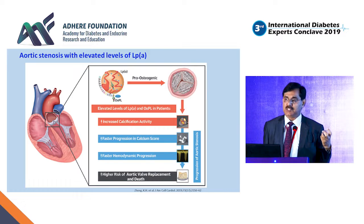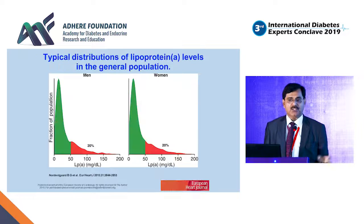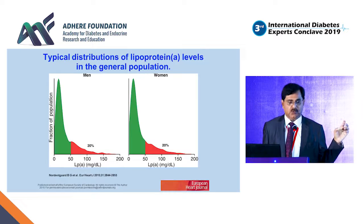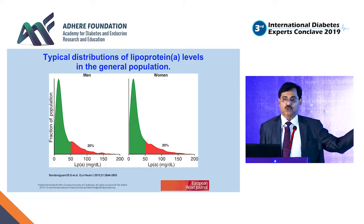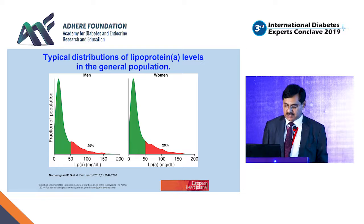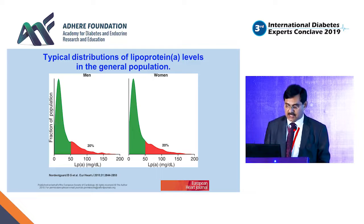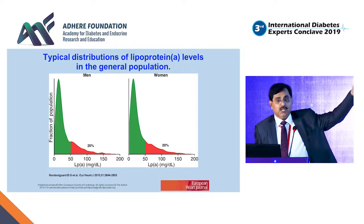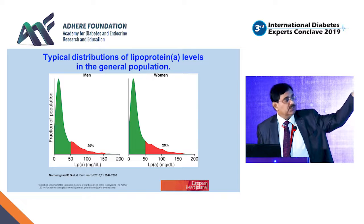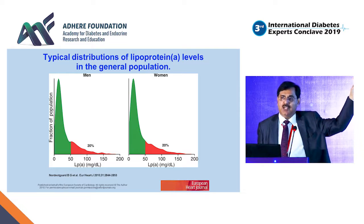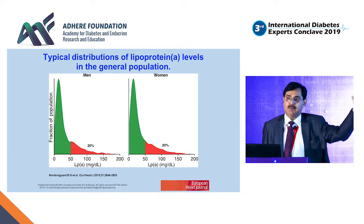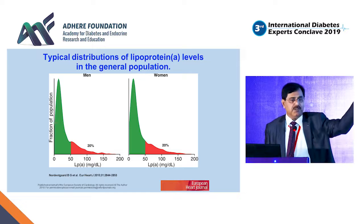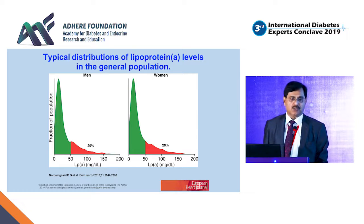High levels of lipoprotein little a cause aortic stenosis to take an extremely aggressive course. In the general population, most patients have values between 0 and 20; values beyond 50 are rarely seen, but if present they become an area of concern. If only Lp(a) is elevated, the risk for future vascular disease is very high — and if combined with type 2 diabetes, the risk becomes stupendous.